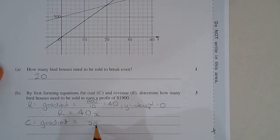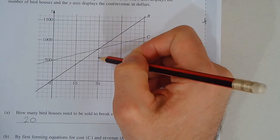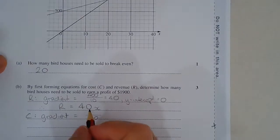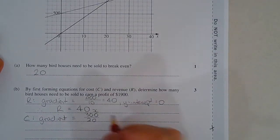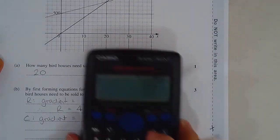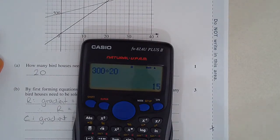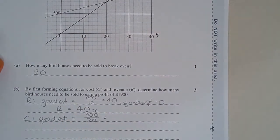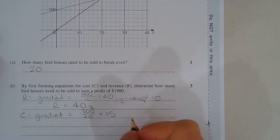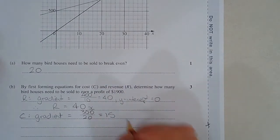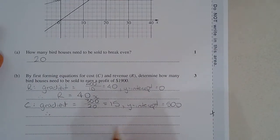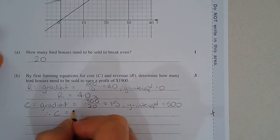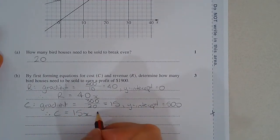Run is 20. And the rise, 1, 2, 3. That's $300. $300 divided by 20 should give us 15. And the y-intercept is here, $500. Therefore, cost C is equal to 15x, our gradient times x plus 500.